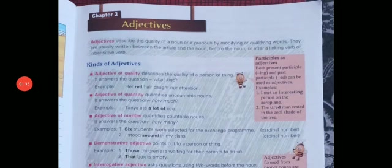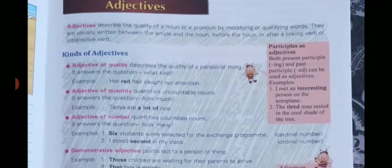So that was the definition of adjective. Now, in the box given here, we have 'Participles as Adjectives.' A participle is a verb which functions as an adjective — a verb which has the force of an adjective. In English, participles are of three kinds: present participle, past participle, and perfect participle. Both present and past participles can be used as adjectives.